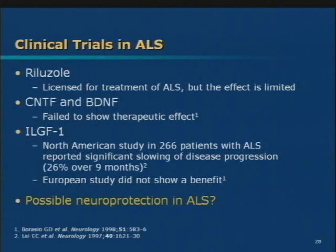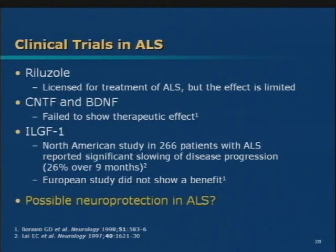ALS, or Lou Gehrig's disease, is a difficult motor neuron disease. It rapidly progresses and most patients don't survive more than a few years. There's a great emphasis on finding something to slow down this disease, and the problem is we know less about ALS and its pathology than we do about Alzheimer's, stroke, or MS. There is a drug called Riluzole which is approved for the treatment of ALS. It seems to slow down the progression of disability a little bit, but not much — it's the best so far, but far from what patients and doctors would want.